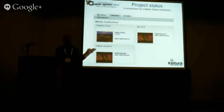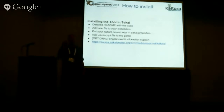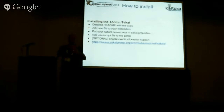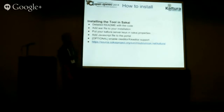Installing is rather easy — it's actually one of the easier tools to install. It's similar to plug-and-play: build it, deploy it, put it in there, and then there are a few properties settings to configure. We've created a detailed README that gives you a nice set of instructions. You have to build the tool; if you want to integrate it with CK Editor we give you instructions and a small script that does a lot of the integration for you, so you'll have a nice button to select things. Basically, add the more file to your installation and put in your Kaltura server keys and properties — I'll give you an example of those.